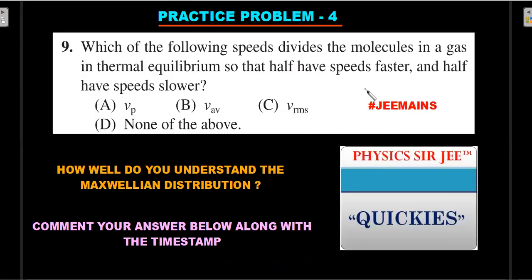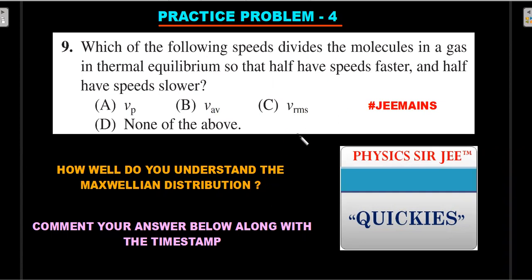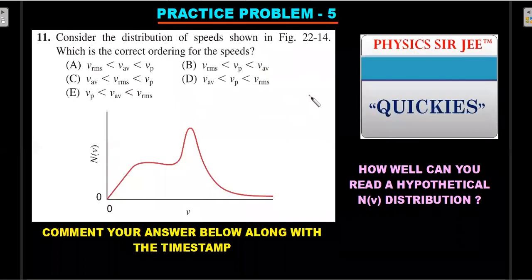Practice problem four is at JEE Mains level, ensuring something for every standard. It's based on normal ideal gas KTG theory — no hypothetical situation. It asks which of the listed speeds corresponds to a given statement, testing how well you understand Maxwellian distribution and how the three characteristic speeds relate to energy. Comment your answer with the timestamp and the option.